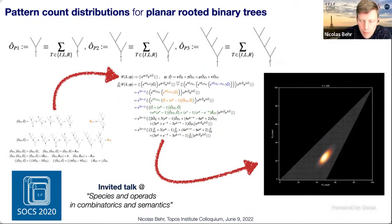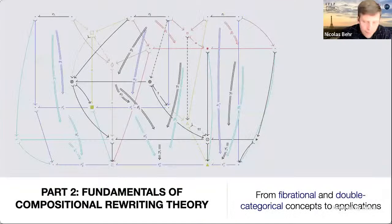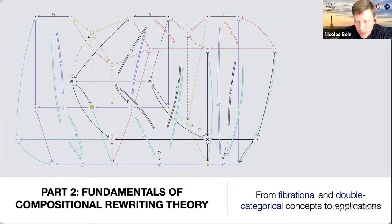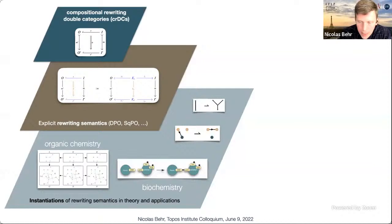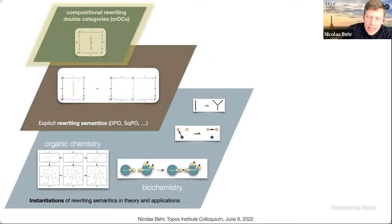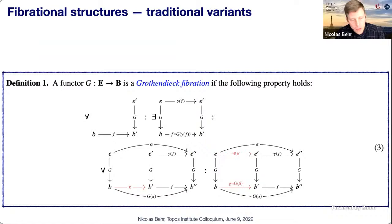By formalizing compositionality in rewriting we get a new computational device that allows us to reason about these systems and hopefully get some insights in biochemistry at some point. The top level of this hierarchy — a new piece — is a formalization of the conditions under which the rewriting semantics is compositional, in terms of double categories. This uses several ingredients, the first being fibrational structures.